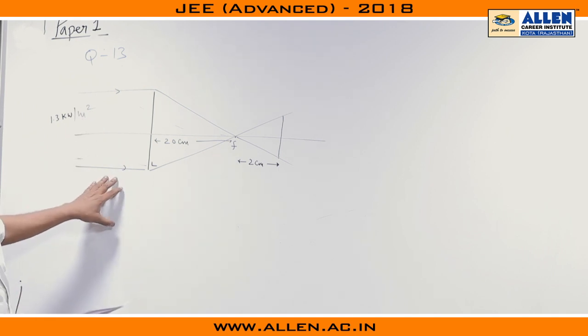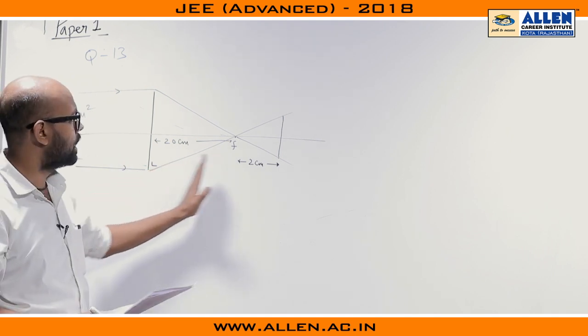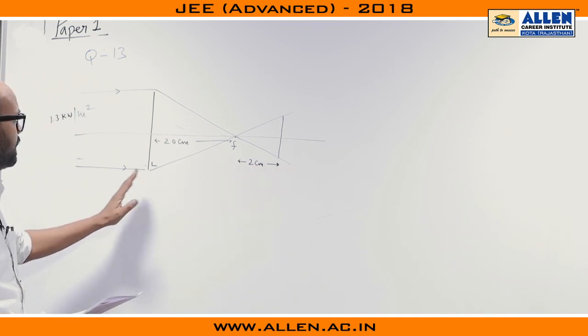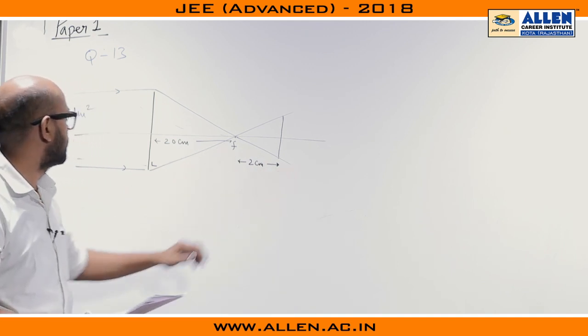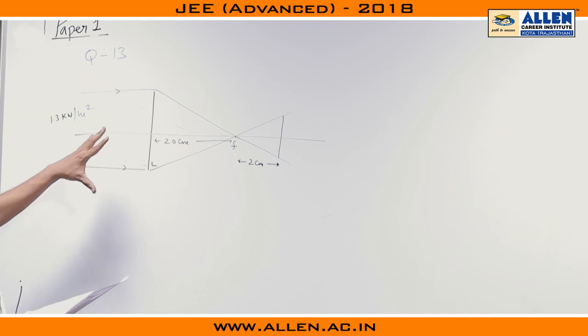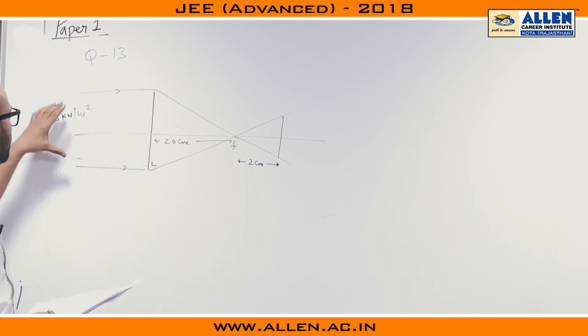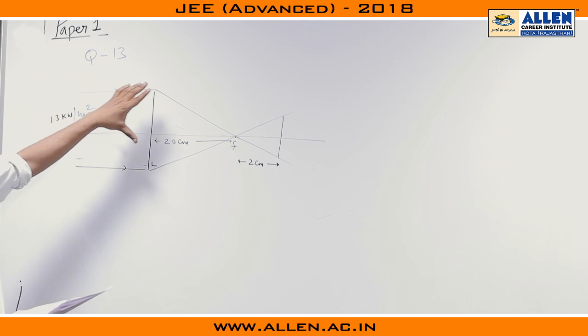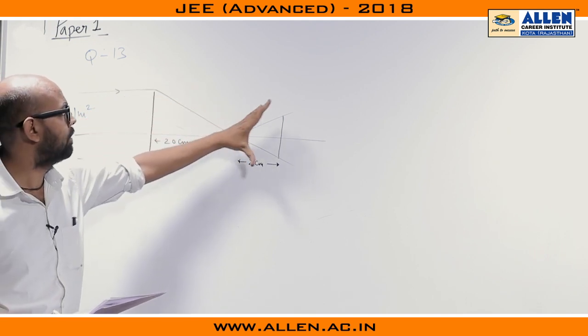And we have to find out the intensity at a distance 22 centimeter from the lens. That means 2 centimeter from the focus. And they have given there is no absorption of light through the lens. So what is happening here? Lights will come parallel to it and then it will meet at focus and then it will diverge again.